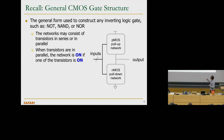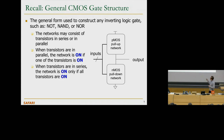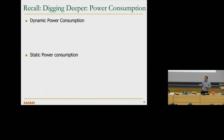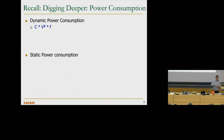When transistors are in parallel, the network is on if one of the transistors is on; when transistors are in series, the network is on only if all transistors are on. Power consumption is going to be even more important going into the future. There are two types of power consumption drawn in a circuit: dynamic — when the circuit is switching — and static — when the circuit is not switching.